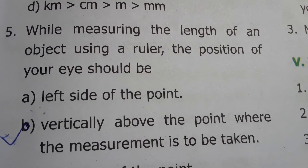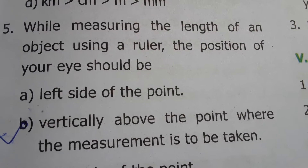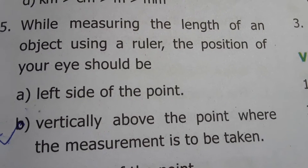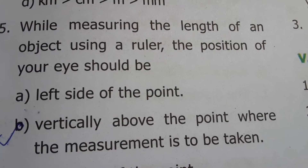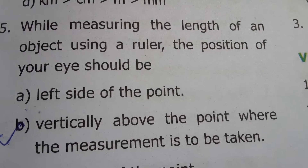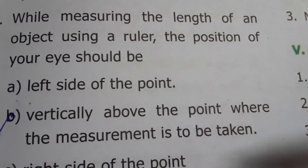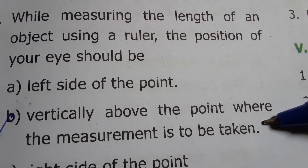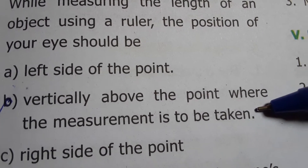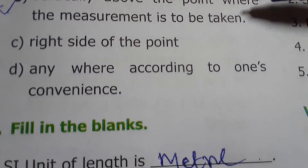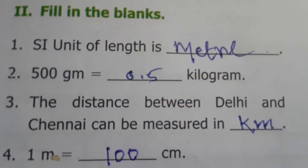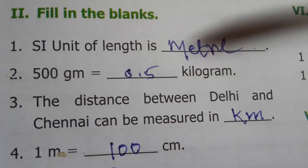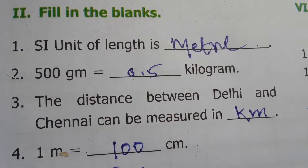While measuring the length of an object using a ruler, the position of your eye should be vertically above the point where the measurement is to be taken. Next is the fill in the blank section. The SI unit of length is meter.